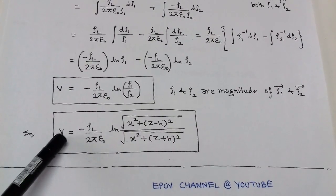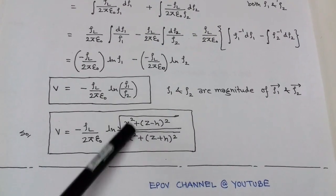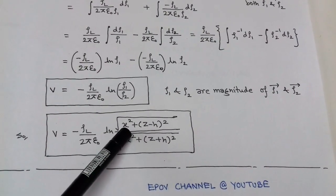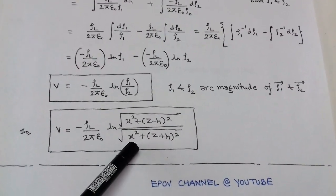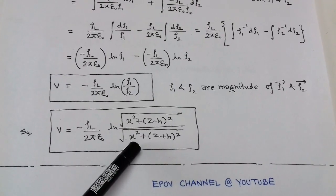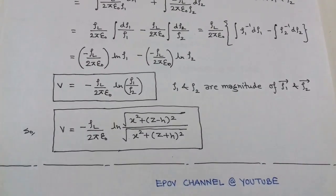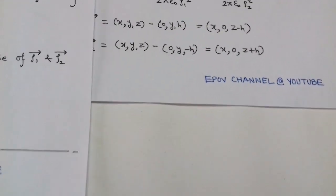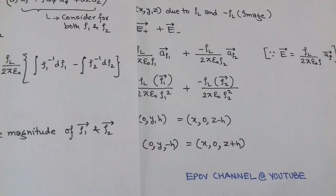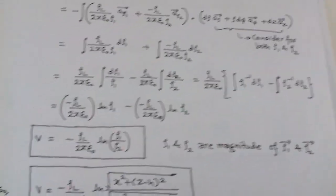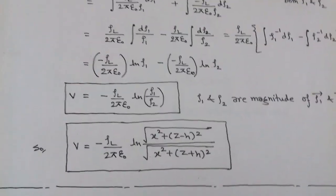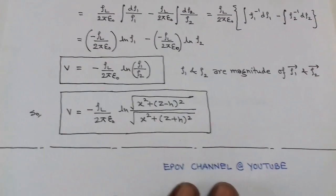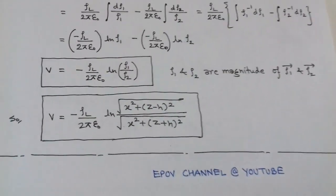The magnitude of rho_1 is the square root of (x^2 + (z-h)^2), while the magnitude of rho_2 is the square root of (x^2 + (z+h)^2). In this way we can determine the potential V.